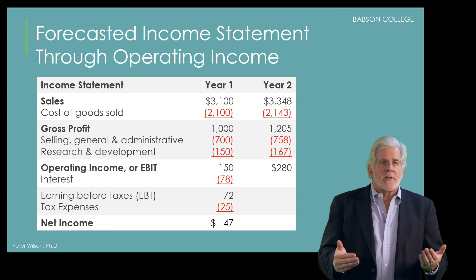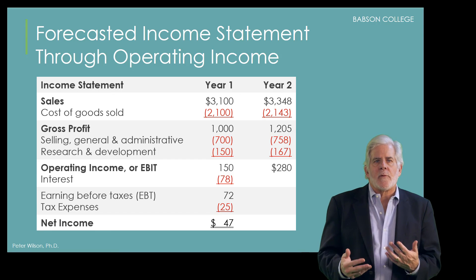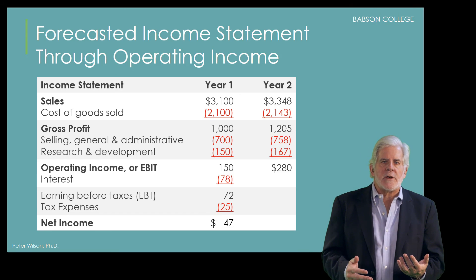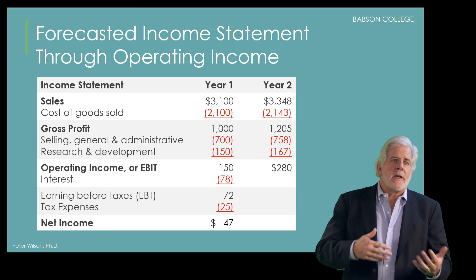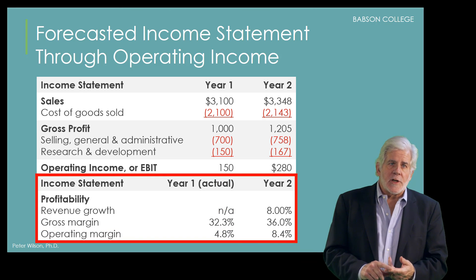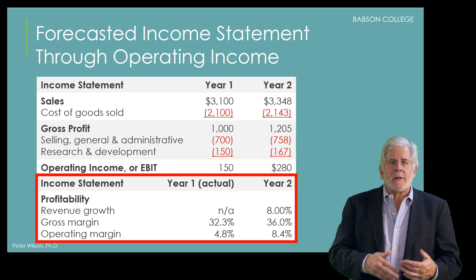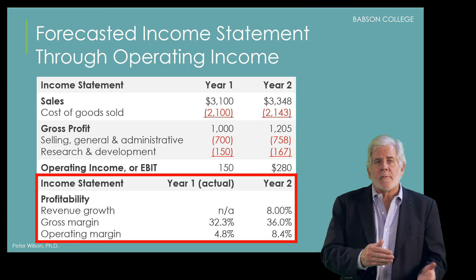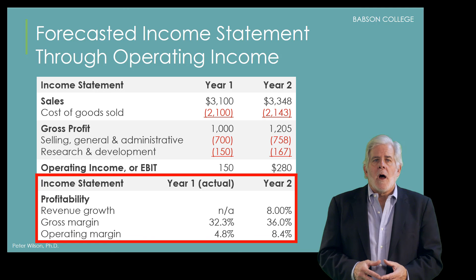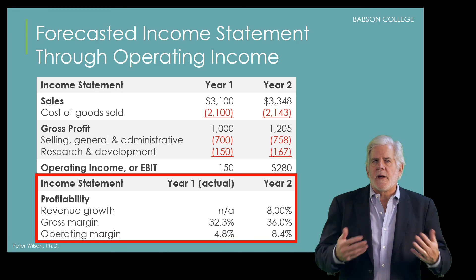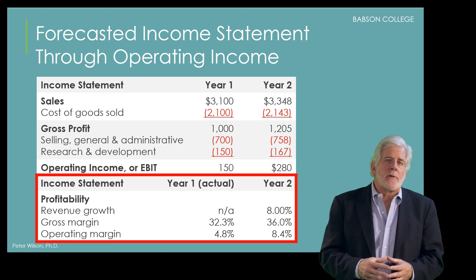At this point we have NebCo's income statement forecasted down through operating income. This is a good time to do a quick check on the reasonableness of the forecast by calculating ratios for year two. Here we can calculate sales growth, gross margin, and operating margin, and we see that we are projecting an increase in operating margin from 4.8% to 8.4%. Hopefully that will be enough to excite our investors, but if not, we may need to find ways to improve that margin.